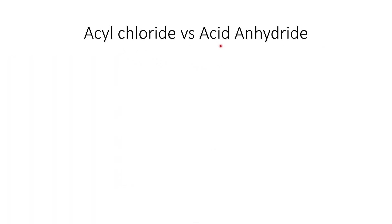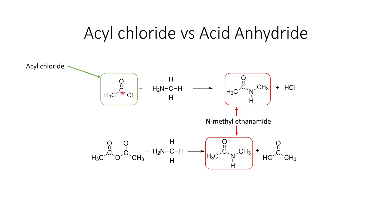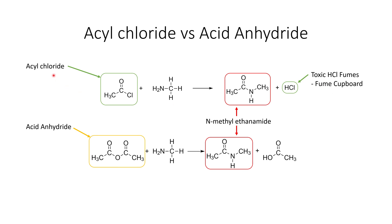Let's consider why we might choose to use an acyl chloride versus an acid anhydride. Both reactions here produce the same product, N-methyl ethanamide. The downsides of using an acyl chloride are that it produces toxic HCl fumes, requiring a fume cupboard, and the reactions are very exothermic. However, acyl chlorides have very fast rates of reaction — if you're trying to produce N-methyl ethanamide quickly, you'll get it a lot faster with an acyl chloride than with an acid anhydride. So using acyl chlorides has key downsides but also the advantage of being faster.